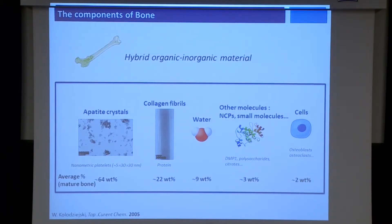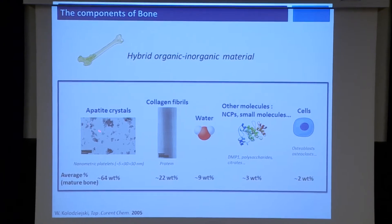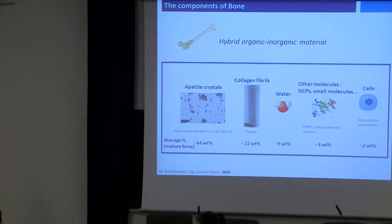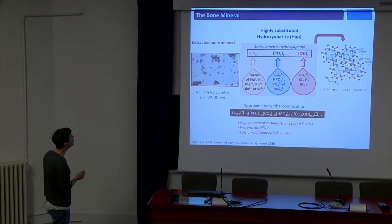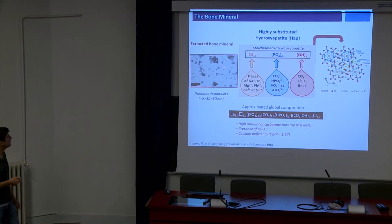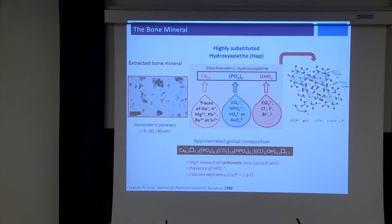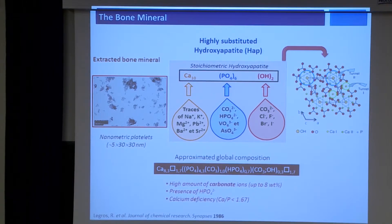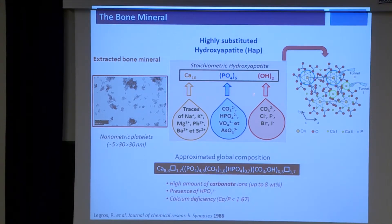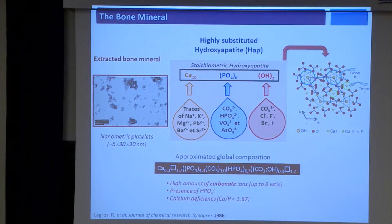Today I will talk about bone. You know that bone is a hybrid, rather complex organic and inorganic material. Here are the components of bone: apatite crystals, collagen fibrils, water, numerous non-collagenous proteins, and other small molecules. I will focus my talk on the bone mineral. You can see here some extracted bone mineral crystals — nanometric platelets of small size. The composition is rather close to stoichiometric hydroxyapatite, but contrary to the stoichiometric phase, you have a lot of substitutions: in particular, carbonate ions and hydrogen phosphate ions. As a consequence, you have a calcium deficiency in order to keep the electroneutrality of the mineral.